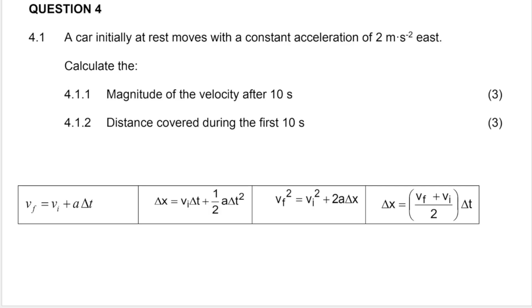So our first question says, a car initially at rest moves with a constant acceleration of 2 meters per second squared east. Calculate the magnitude of the velocity after 10 seconds. Now, when they say a car is initially at rest, it means that its initial velocity or its initial speed is zero.